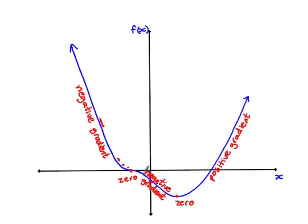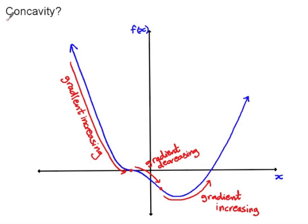Somewhere in between the two zeros, the gradient starts to increase again — it's becoming less steep — and then continues to increase. So the gradient is negative, reaches the minimum turning point, then becomes positive. Throughout one section of the curve the gradient is increasing, and throughout another section it is decreasing. When we talk about the gradient increasing and decreasing, we're talking about the concavity of the curve.